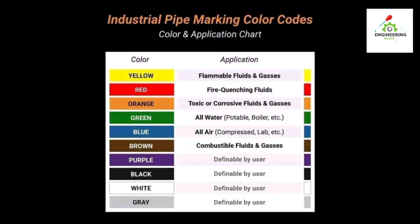Green color is used for all types of water, including potable water. Nuclear color is used for all airs, such as lab air or compressed air. Brown color is used for combustible fluids and gases. Purple color is defined by the users.